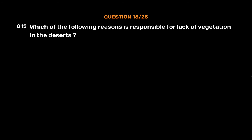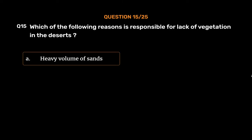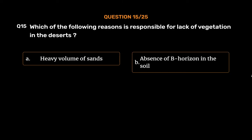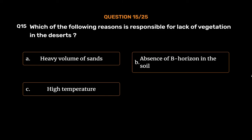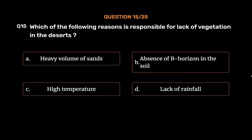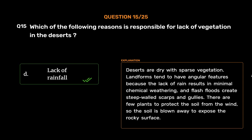Question No. 16: Which of the following reasons is responsible for lack of vegetation in the deserts? Option A: Heavy volume of sands, Option B: Absence of B-horizon in the soil, Option C: High temperature, Option D: Lack of rainfall. The correct answer is Option D, Lack of rainfall. Deserts are dry with sparse vegetation. Landforms tend to have angular features because the lack of rain results in minimal chemical weathering, and flash floods create steep-walled scarps and gullies. There are few plants to protect the soil from the wind, so the soil is blown away to expose the rocky surface.